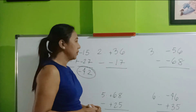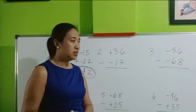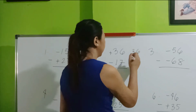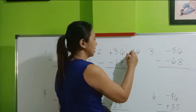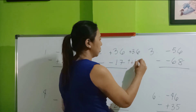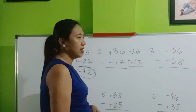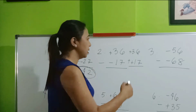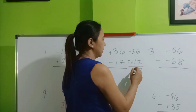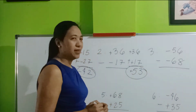Number 2: positive 36 minus negative 17. Copy the minuend. This becomes plus. And then turn it into its opposite number. Follow the rule in addition of integers. Let's add. Positive 53.